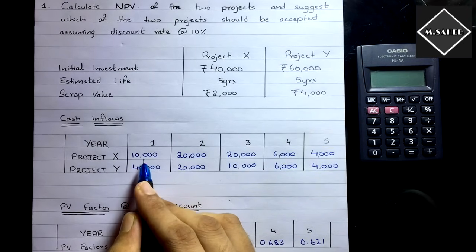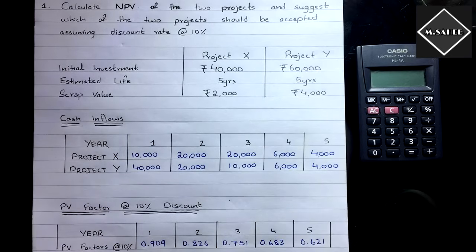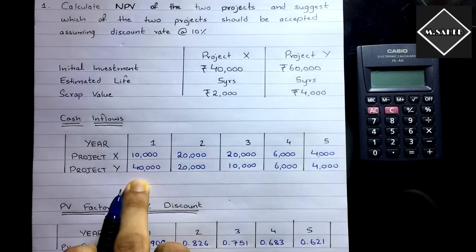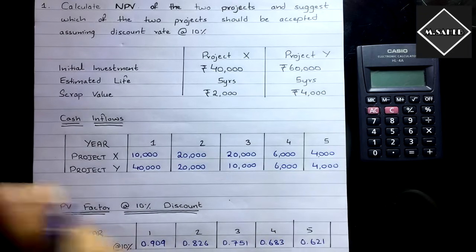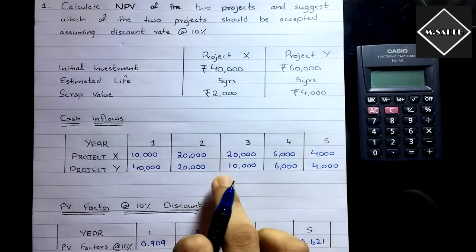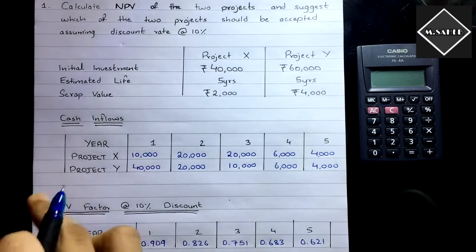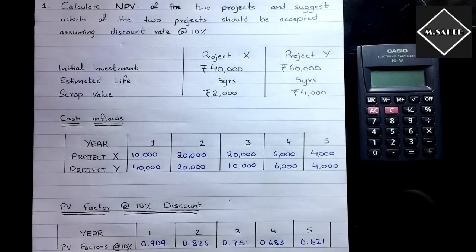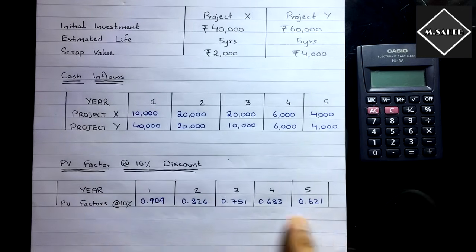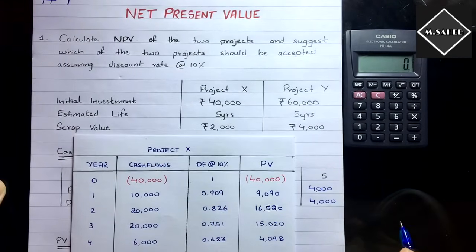The cash inflows of Project X are: 10,000 at end of year 1, 20,000 at year 2, 20,000 at year 3, 6,000 at year 4, and 4,000 at year 5. For Project Y: 40,000, 20,000, 10,000, 6,000, and 4,000 respectively. Since these are future values, we need to discount them to present value using the discounting factors provided in the question.